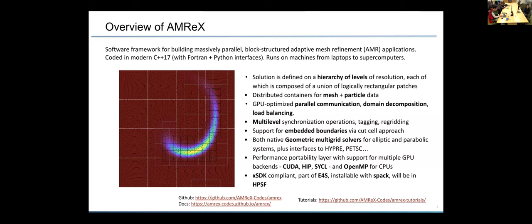We also provide GPU-optimized parallel communication functions, as well as functions for doing domain decomposition and load balancing. The kinds of multi-level synchronization operations you need to do when doing AMR, such as tagging cells for refinement and re-grading, are also provided. We have support for complex geometry via embedded boundaries. We provide both native geometric multi-grid solvers, plus interfaces to other math libraries like Hypre and PETSc. Most relevantly to this series, I guess, AMReX comes with a performance portability layer that supports multiple types of GPU backends, CUDA, HIP, and SYCL, and also OpenMP for CPU runs. And we are xSDK compliant. We're part of E4S. You can install AMReX with Spack, and shortly AMReX will be part of the High Performance Software Foundation that will be announced in a few months.